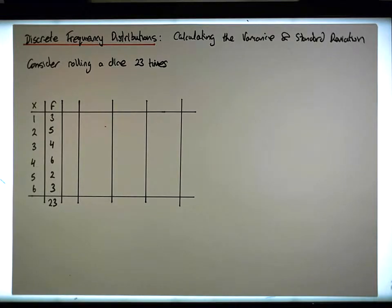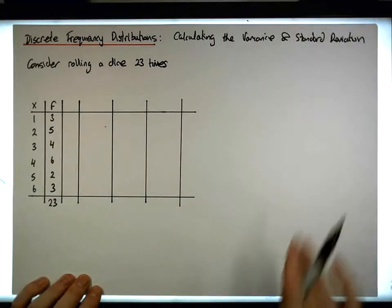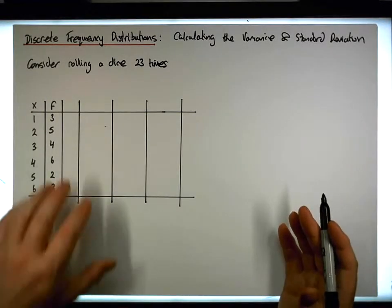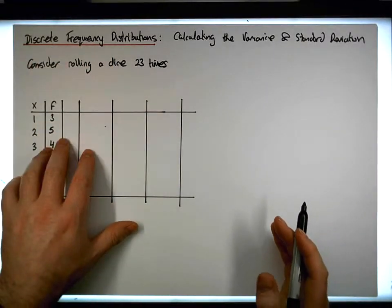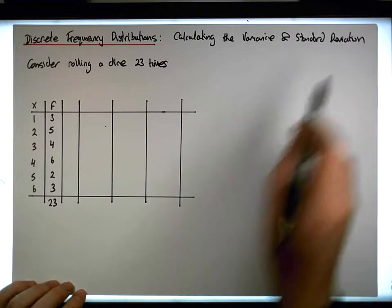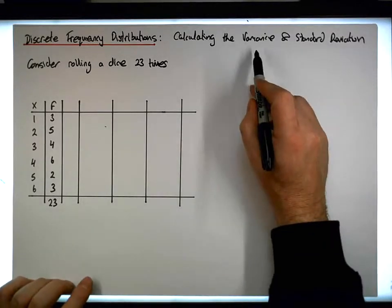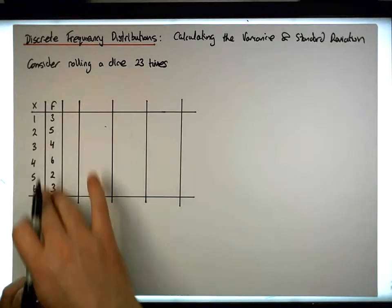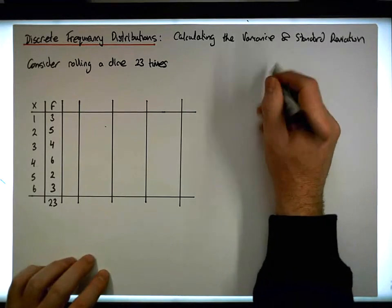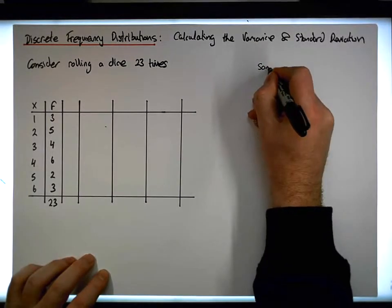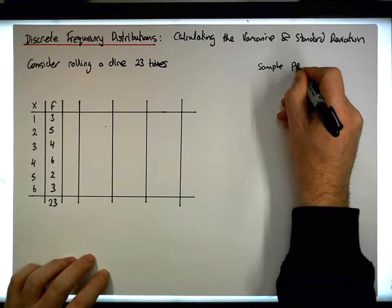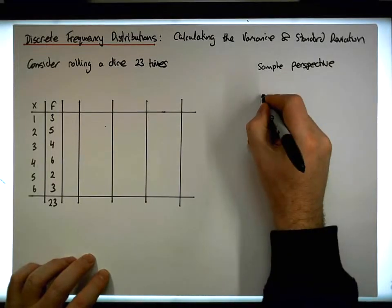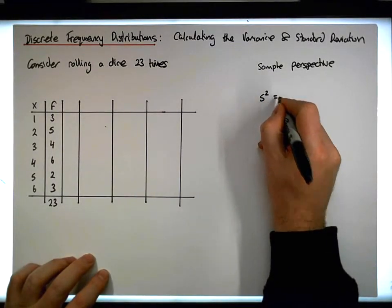Now, what we'd like to calculate in this particular video is the variance and the standard deviation. Keep in mind that dependent on whether the frequency distribution is associated with population data or sample data, we've got two different formulas that we can use for the variance and two for the standard deviation. In this case, we've only rolled the die 23 times, so this can be considered sample data. So from a sample perspective, we have that the variance